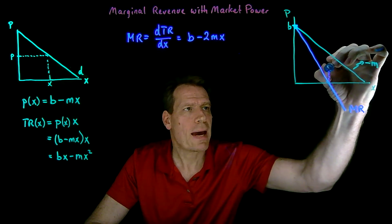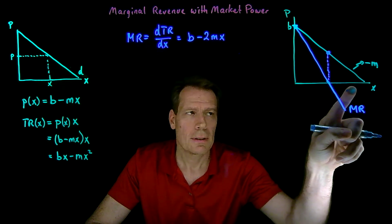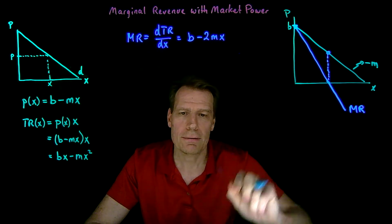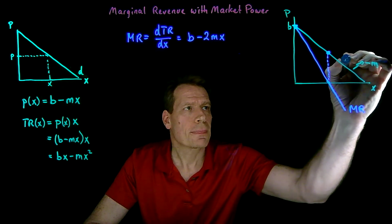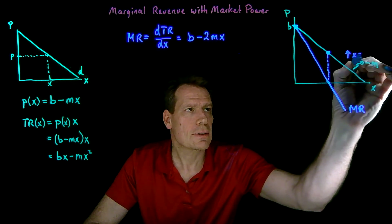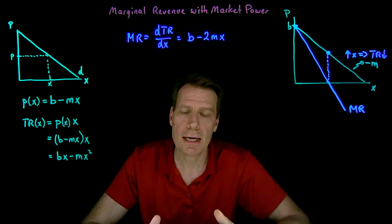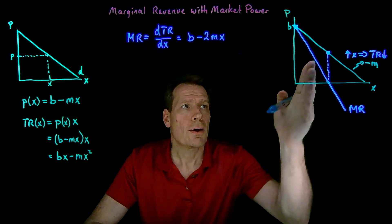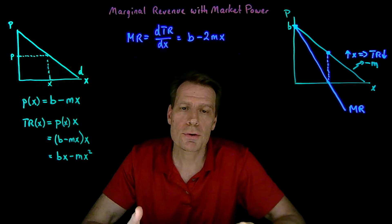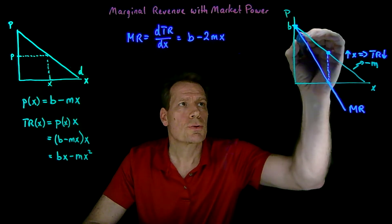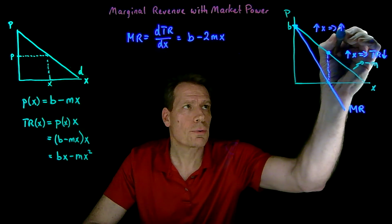This tells us that once we get past the midpoint of the demand curve, if the firm produces more output, the additional revenue it gets is negative — so total revenue is going to fall. On that portion of the demand curve, an increase in output implies total revenue falls because marginal revenue is negative. On the other side of the midpoint, if the firm produces more, marginal revenue is positive, which means total revenue goes up.